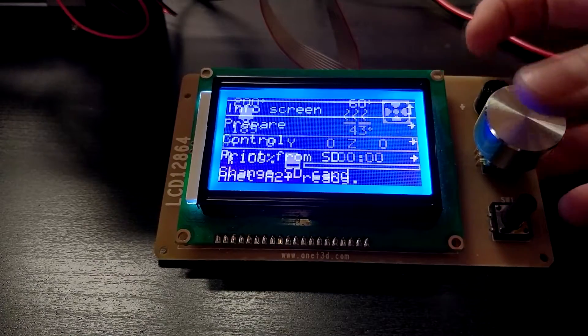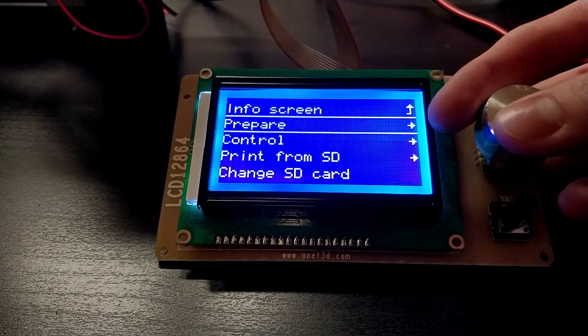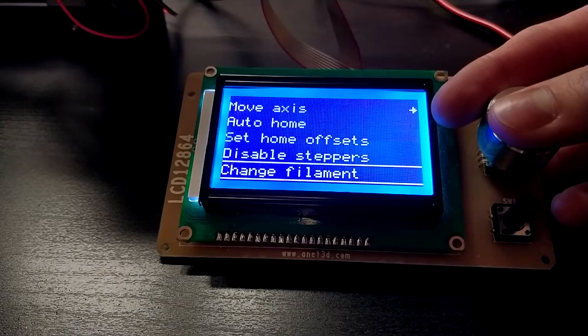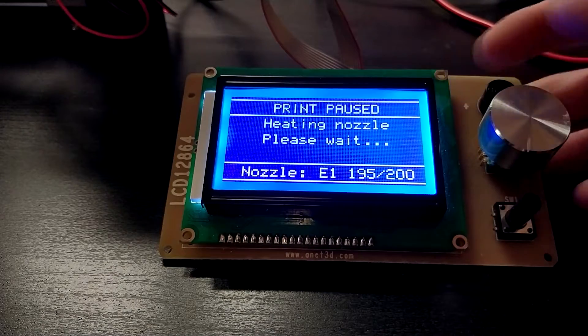Advanced Pause furthermore adds a new change filament setting into the prepare and tune menu and also allows you to initiate a filament change via the M600 command, which is the option we want to explore today.